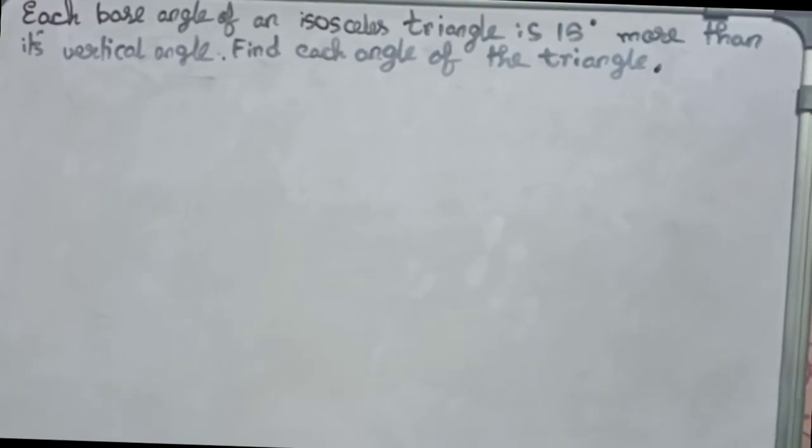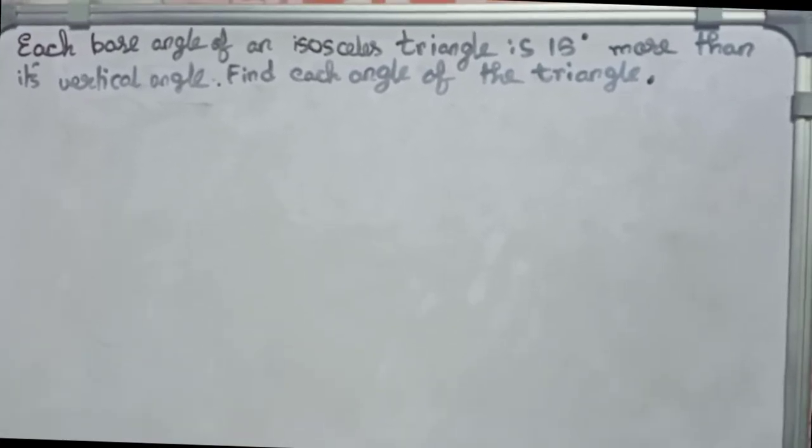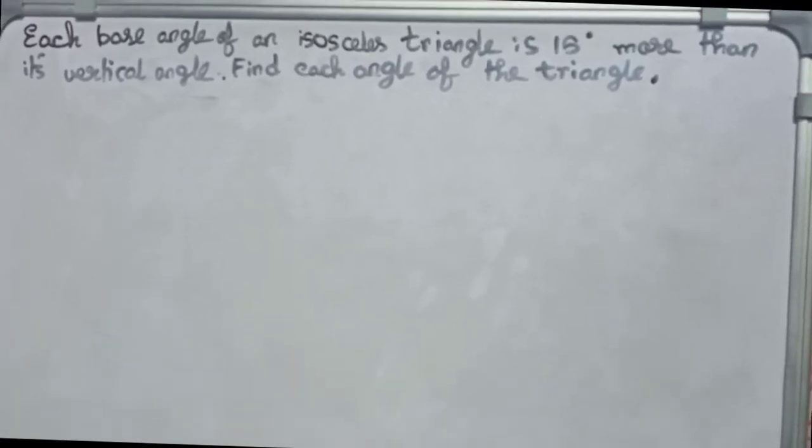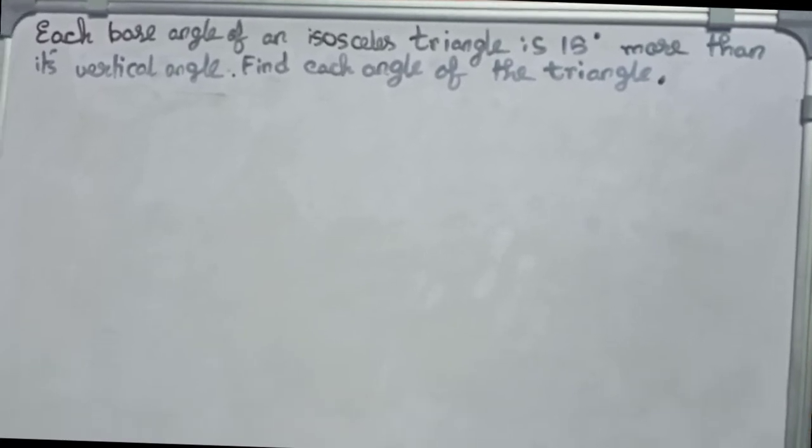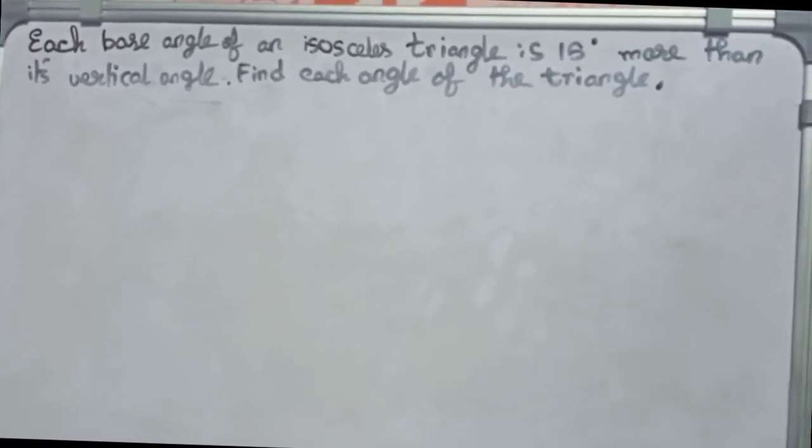Hello guys, welcome to this video. In this video our question is: each base angle of an isosceles triangle is 15 degrees more than its vertical angle. Find each angle of the triangle.